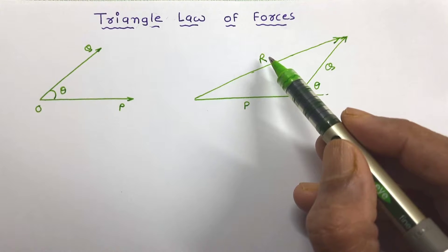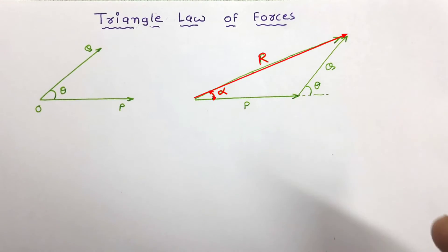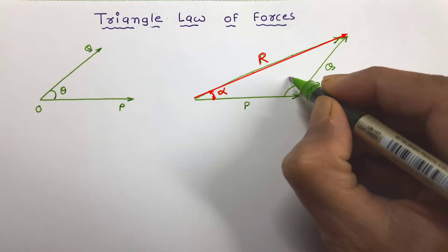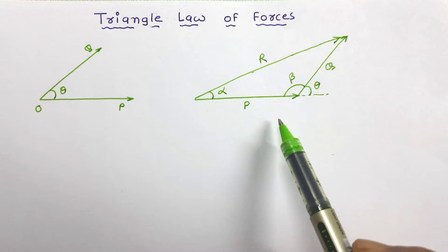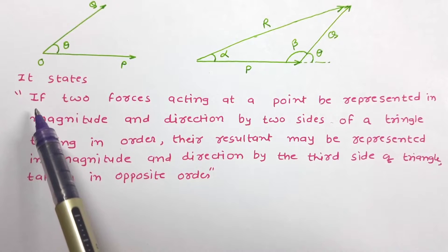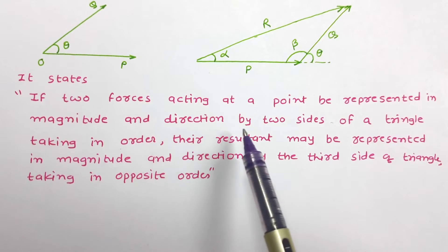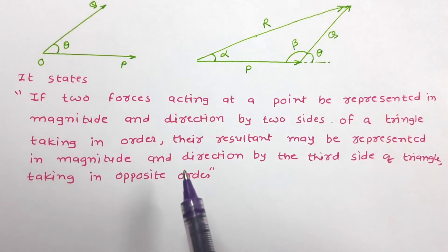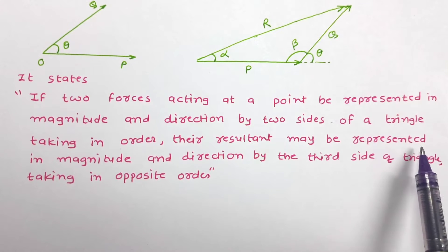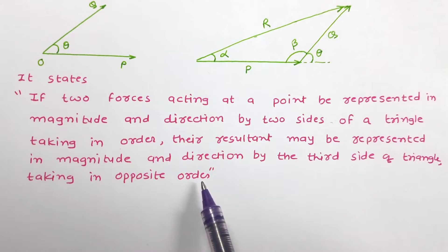This R will give us the magnitude of resultant force and its direction with Q will be alpha, and let us say this angle is beta. The statement of triangle law of forces states: if two forces acting at a point be represented in magnitude and direction by two sides of a triangle taken in order, the resultant may be represented in magnitude and direction by the third side of the triangle taken in opposite order.